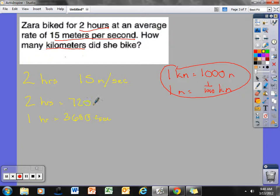She covered 15 meters per second. To figure out how many meters she covered, I'm going to times this by 15 because every one of these seconds, she covered 15 meters. If I take 7,200 and times that by 15 meters per second, she biked 108,000 meters in those 2 hours.